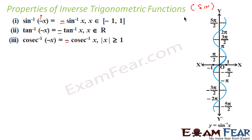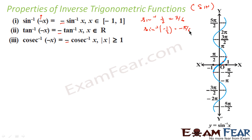Logically, if you look at the sin function, the principal interval ranges symmetrically. If you take x = 1/2, sin⁻¹(1/2) = π/6, and sin⁻¹(−1/2) = −π/6. Since the center of the principal interval is (0, 0), the moment you take the negative of x, the output also becomes negative. This applies similarly for tan and cosec whose principal intervals also have center (0, 0).